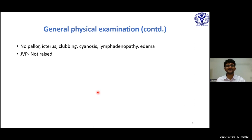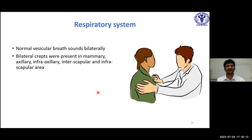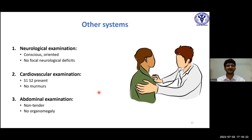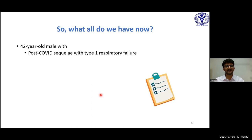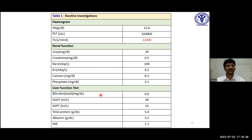On general physical examination, the patient had no pallor, icterus, cyanosis, clubbing, lymphadenopathy, or edema. JVP was not raised. On systemic examination, the respiratory system was significant for bilateral creps present in mammary, axillary, infra-axillary, inter-scapular, and infra-scapular areas. Other system examination was essentially unremarkable. We now have a 42-year-old male with post-COVID sequelae with type 1 respiratory failure. Initial investigations on day 19 showed hemoglobin 12.6 and total leukocyte count 12,200. Liver function tests, renal function tests, and INR were normal.